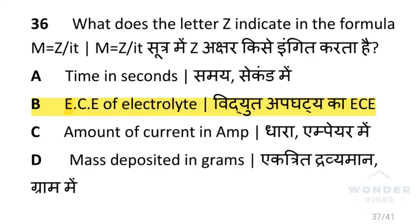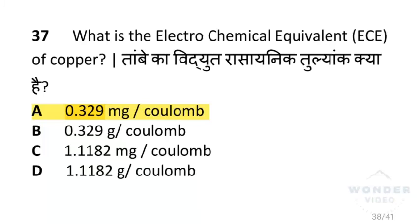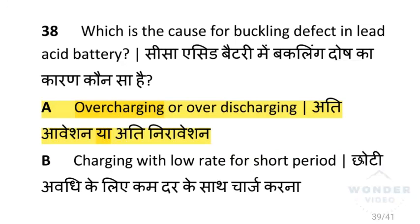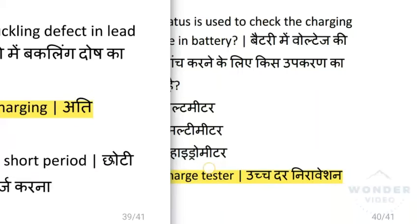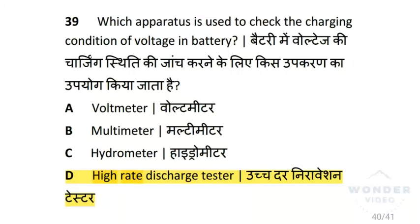What is the electrochemical equivalent (ECE) of copper? That is 0.329 mg per coulomb. What is the cause of the buckling defect in a lead acid battery? Overcharging or over-discharging. Which apparatus is used to check the charging condition of voltage in a battery? That is a high rate discharge tester.